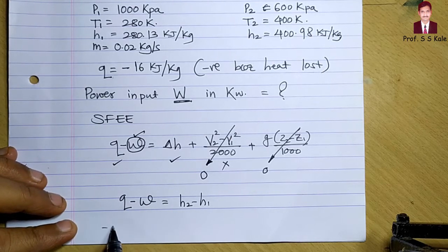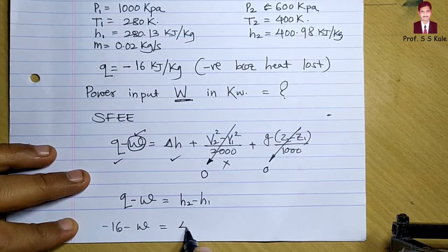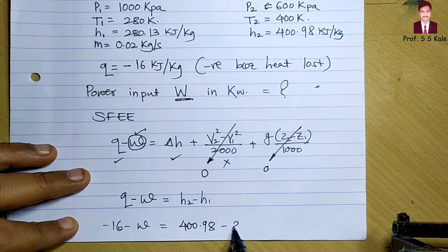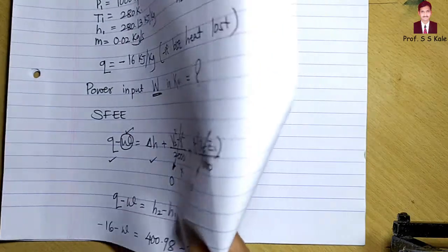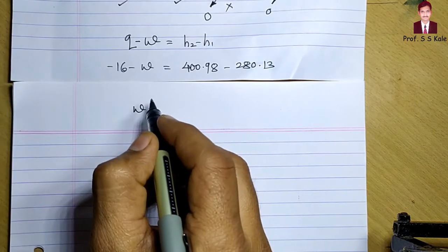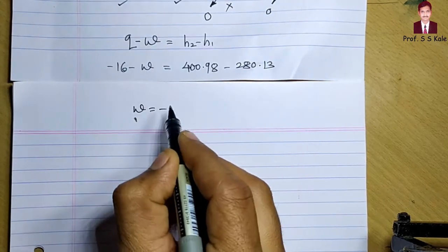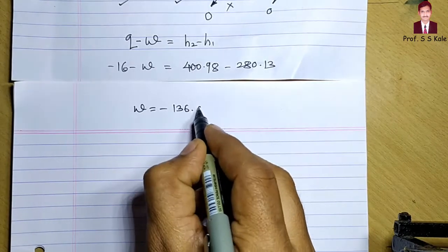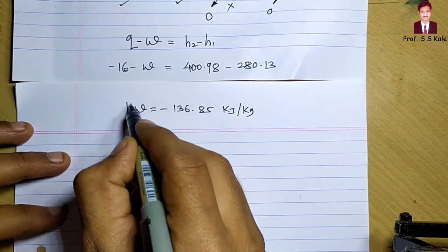Let's put in the values: Q is minus 16, minus W equals H2 minus H1, which is 400.98 minus 280.13. By doing this simple calculation, we can determine small w. The value of small w comes out to be minus 136.85 kilojoule per kg.